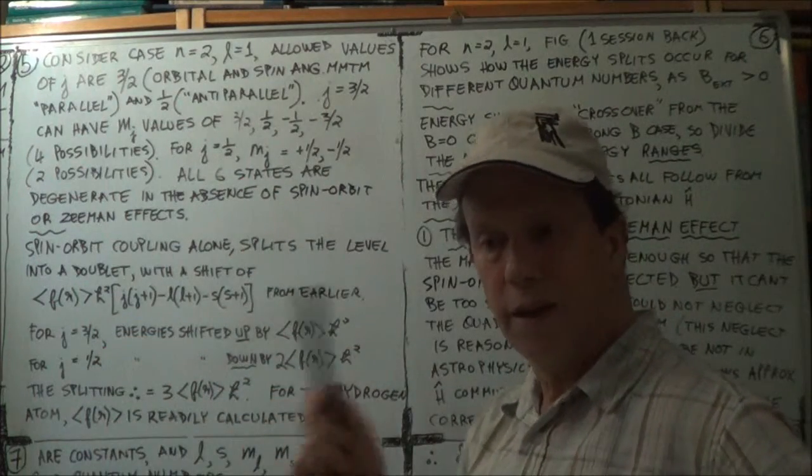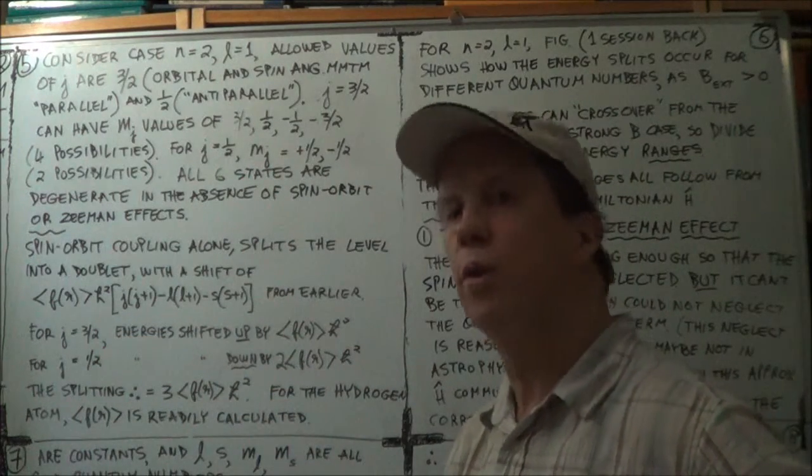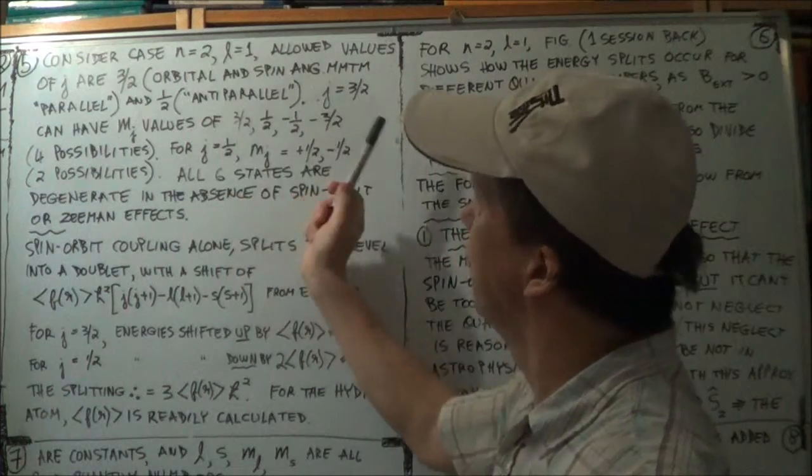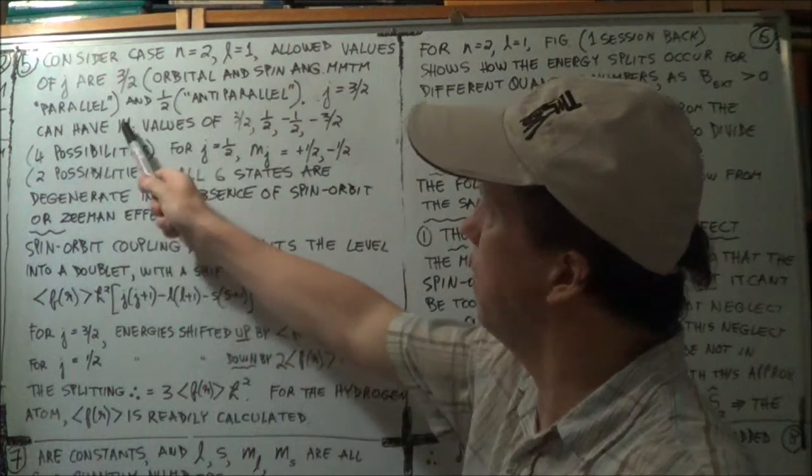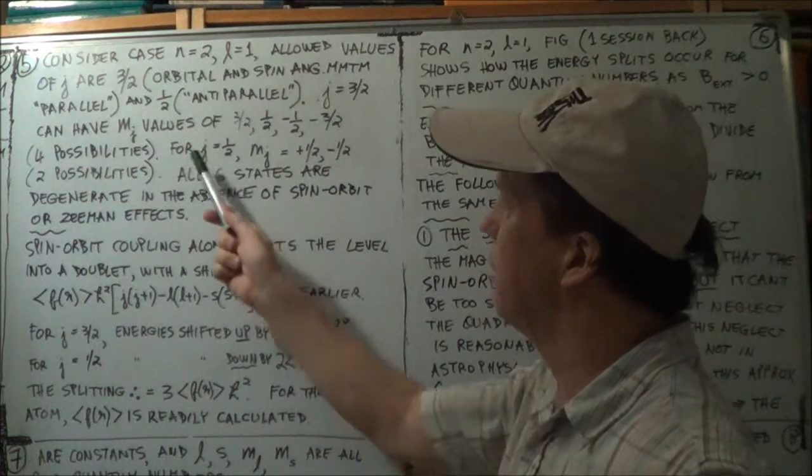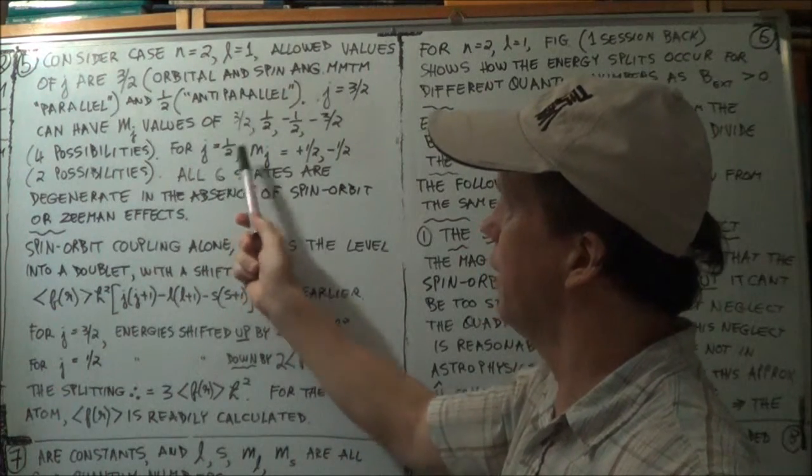And you saw in the previous diagram, the energy splitting four ways, corresponding to the four different values of M, M_J. And similar for when J is a half.